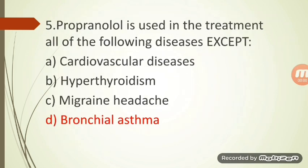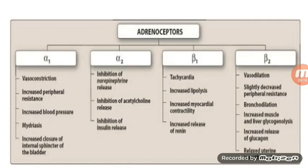Fifth question: Propranolol is used in the treatment of all of the following diseases EXCEPT — Option A: Cardiovascular disease, Option B: Hyperthyroidism, Option C: Migraine headache, and Option D: Bronchial asthma. There are different types of adrenoreceptors: alpha 1, alpha 2, beta 1, beta 2, beta 3. Propranolol is a non-selective beta blocker that can block either beta 1 or beta 2 receptors.